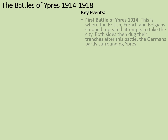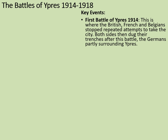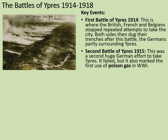The key events at Ypres: the First Battle of Ypres in 1914 is where the British, French and Belgians stopped repeated attempts to take the city. Both sides then dug their trenches, and after this battle the Germans partly surrounded Ypres. The Second Battle of Ypres in 1915 was a second huge German effort to take Ypres. It failed, but it also marked the first widespread use of poison gas in World War One. Previously tear gas had been used, but that's not poisonous — it's just irritating.